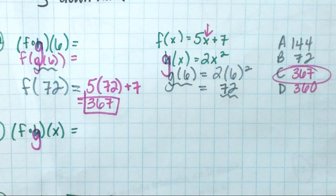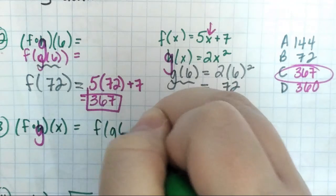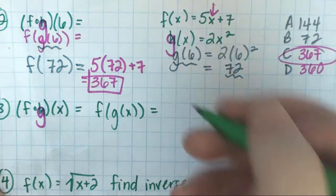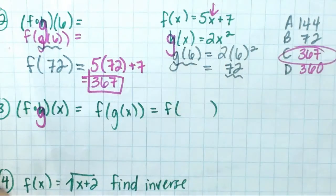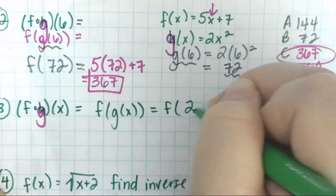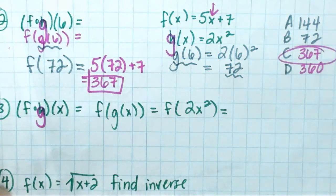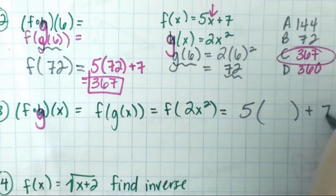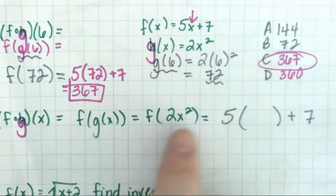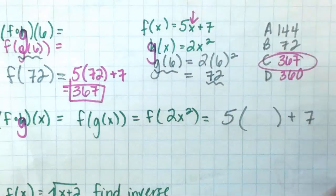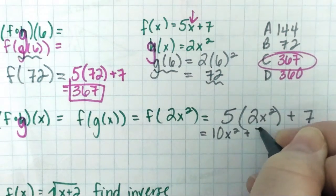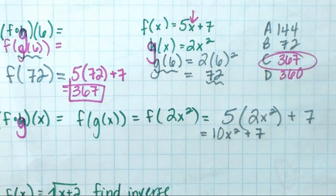Now we have to do number 3, same sort of thing. So I want F of G of X, but we don't have any numbers. It's still a fog, but I don't have any numbers. So I need to replace G of X. What is G of X? 2X squared. So everywhere in F, so F is 5X plus 7, everywhere in F that I see an X, I'm replacing that X with the 2X squared. So it's 5 times 2X squared, which is 10X squared plus 7.